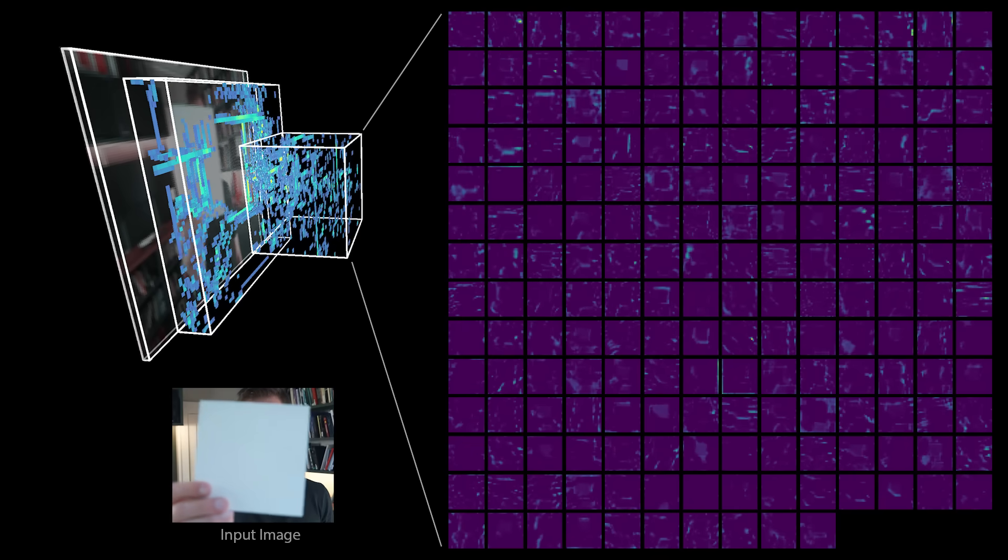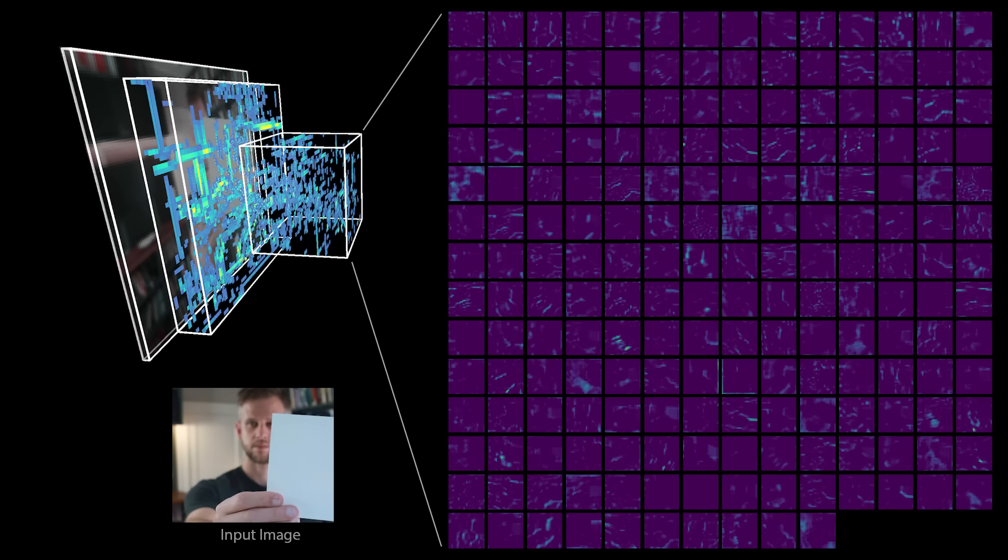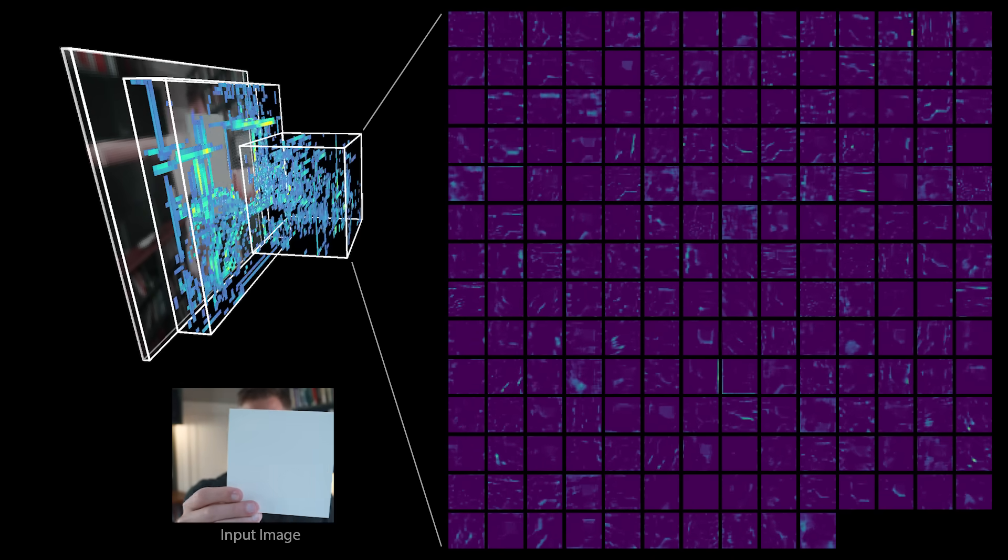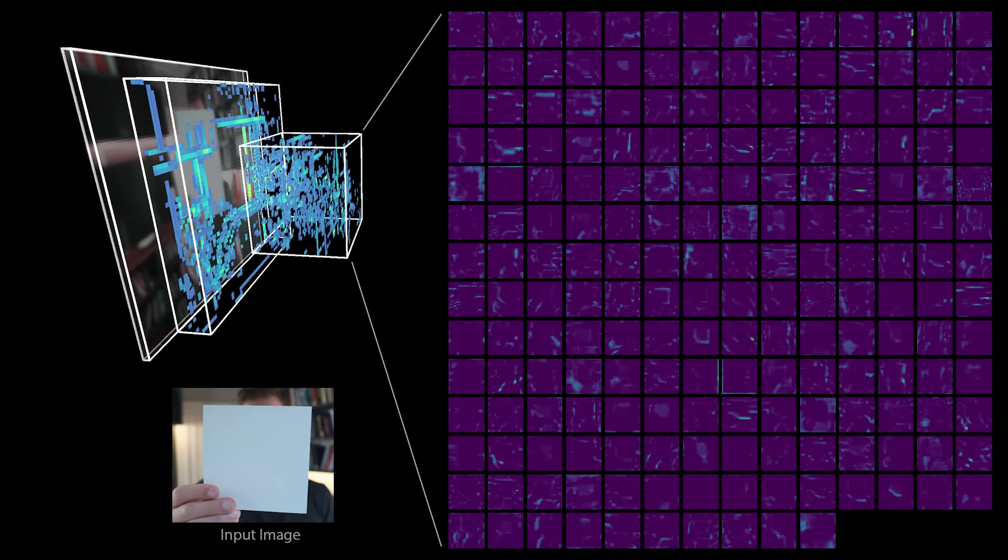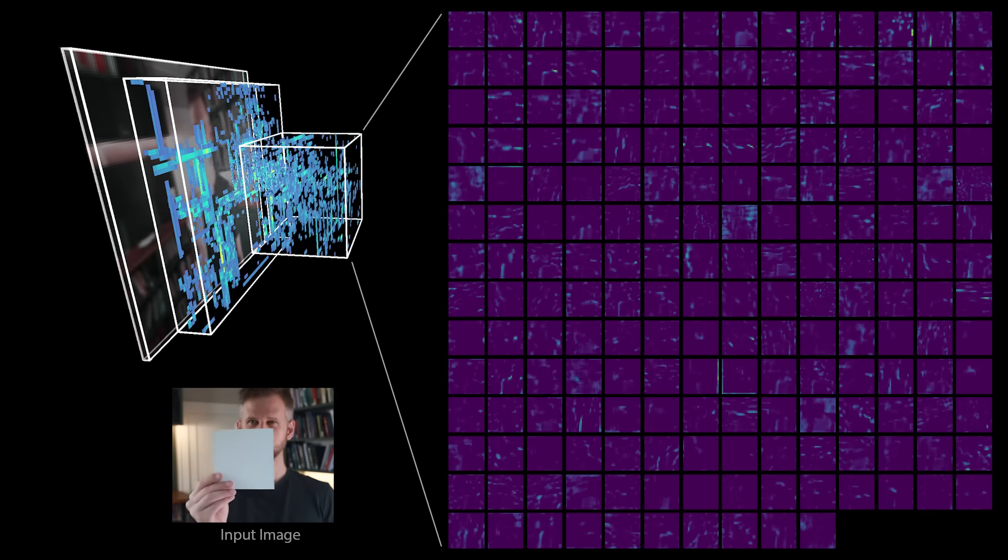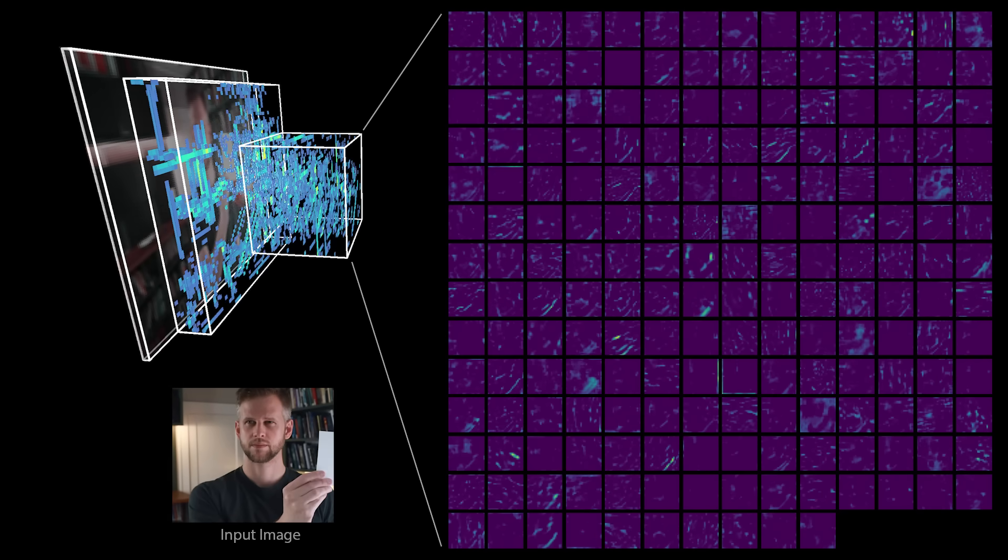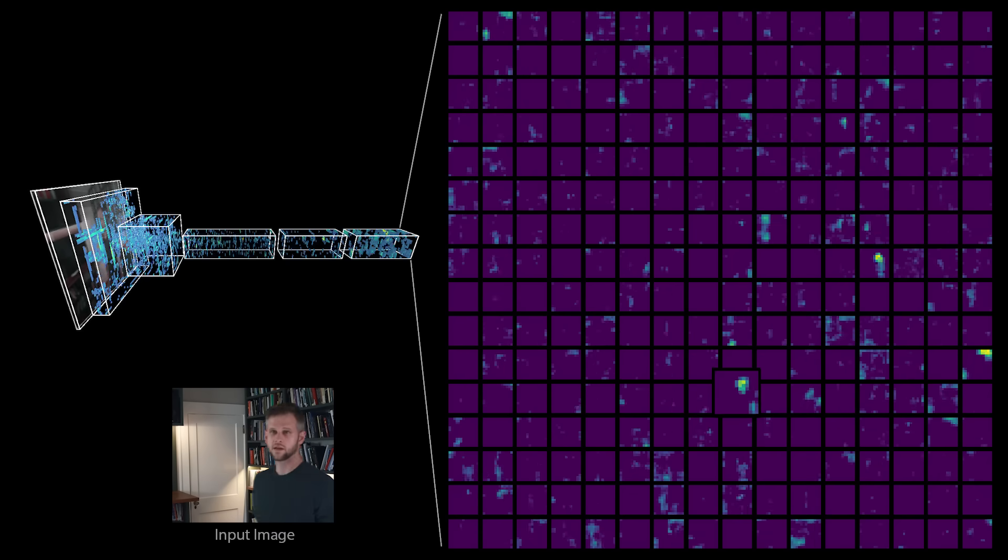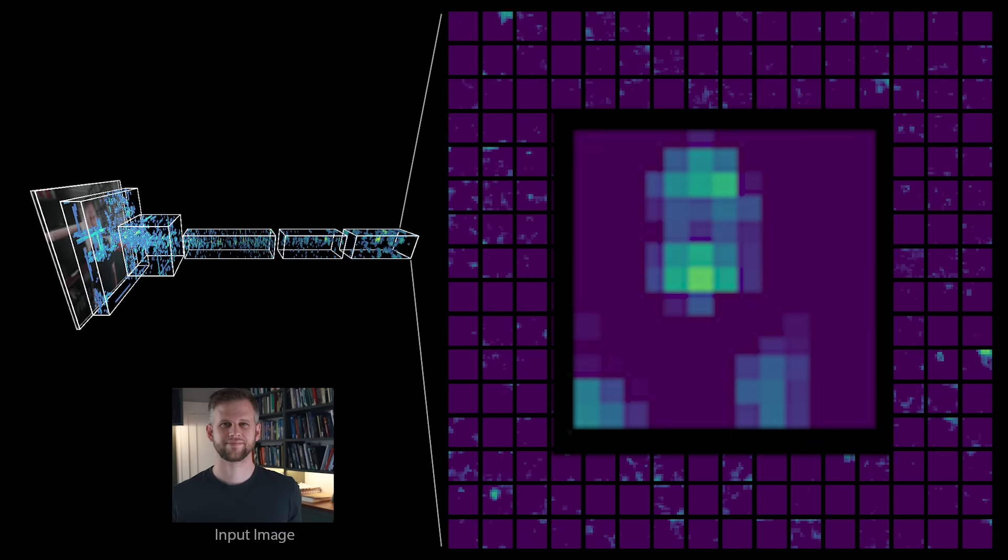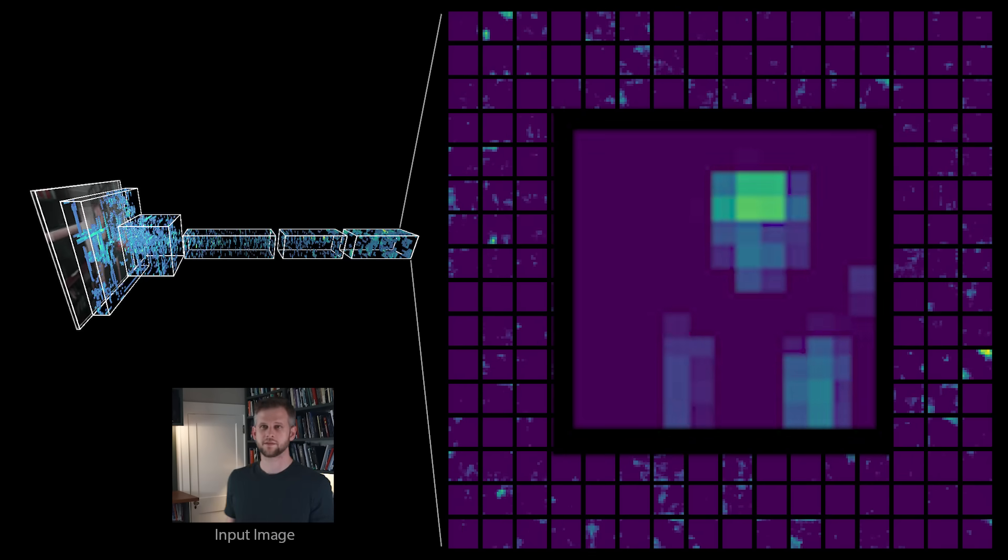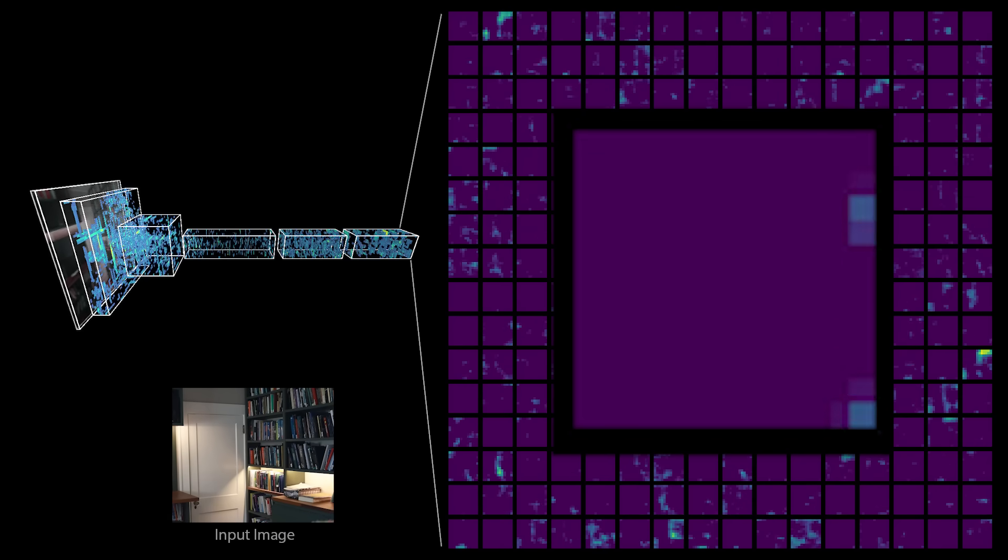A simple way to see what's going on is to try to find parts of various images that strongly activate the outputs of the second layer. For example, this activation map appears to be putting together edge detectors to form basic corners. Remarkably, as we move deeper into AlexNet, strong activations correspond to higher and higher level concepts. By the time we reach the fifth layer, we have activation maps that respond very strongly to faces and other high level concepts.